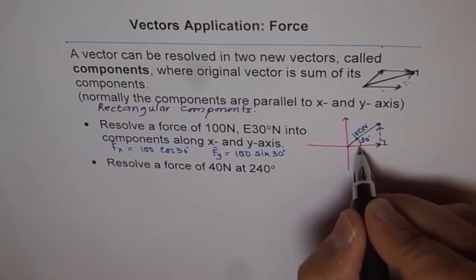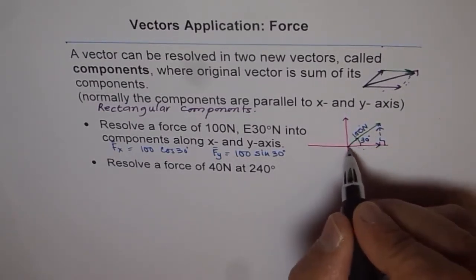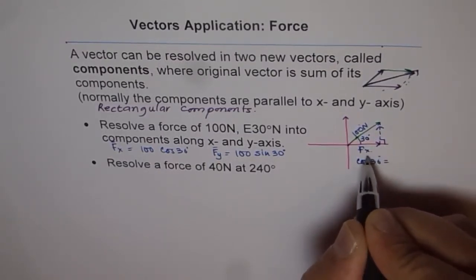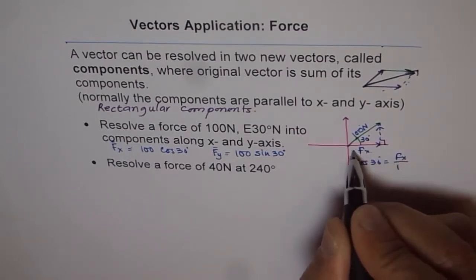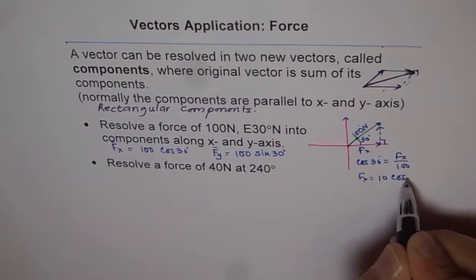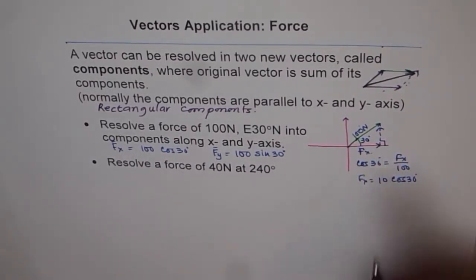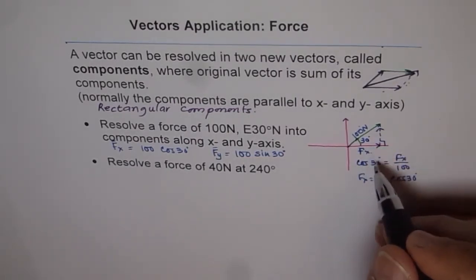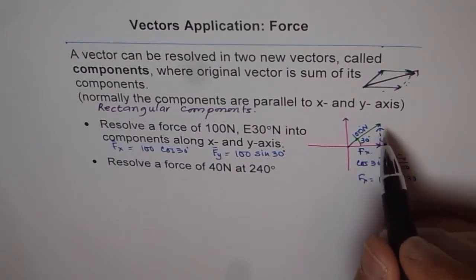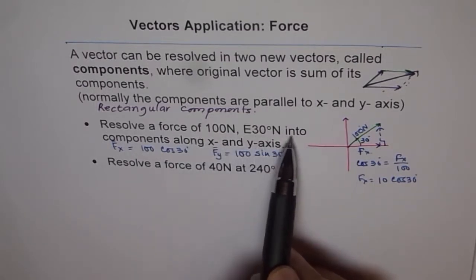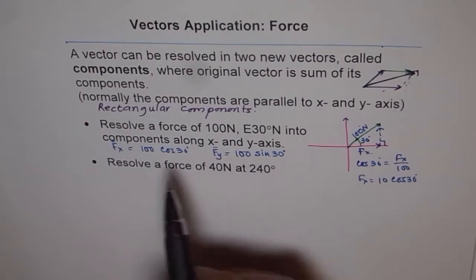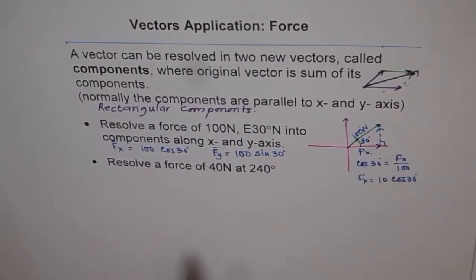Using trigonometry: cos of theta equals adjacent over hypotenuse, so cos 30° = Fx / 100, which gives Fx = 100·cos 30°. That is how we get our result — applying trigonometric ratios in the right triangle helps us find the components of a force along x and y. These are referred to as rectangular components. Use your calculator to compute 100·cos 30° and 100·sin 30° to get the two values.